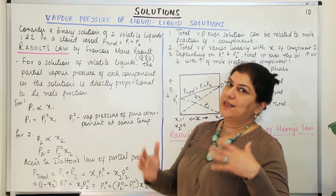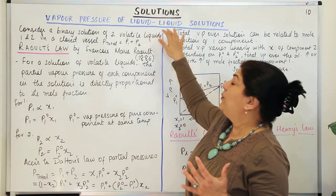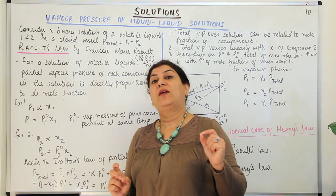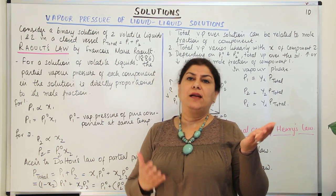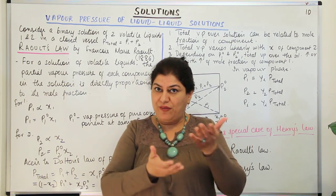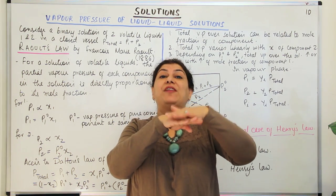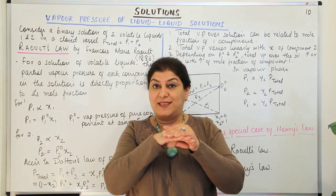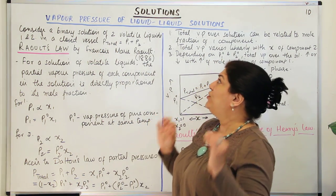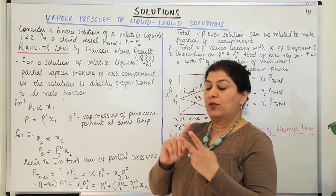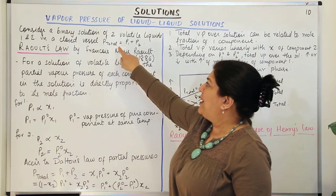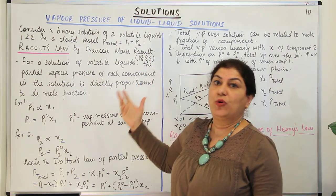Consider a binary solution of two volatile liquids — one and two. One will be more volatile and one less volatile. Both will produce vapors and reach a state of dynamic equilibrium where the concentration of vapors becomes constant. For example, a mixture of water and alcohol in a closed vessel. The total vapor pressure of both should be P1 plus P2 according to Dalton's law.